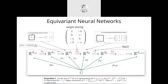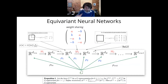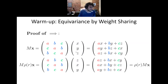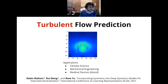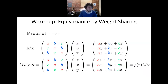Basically every version of equivariance is essentially some fancier version of this same picture. If you can understand this simple case, you can basically understand all equivariant neural networks.